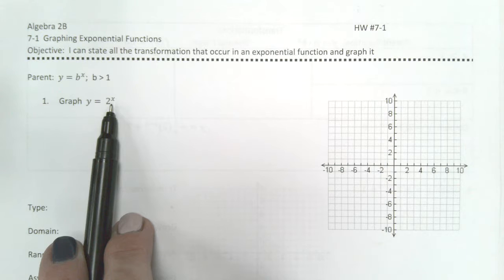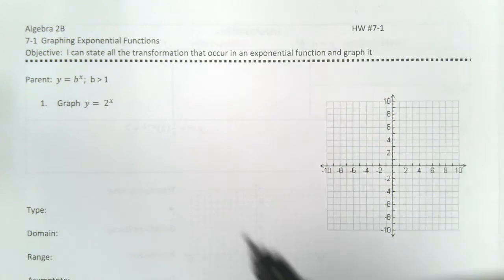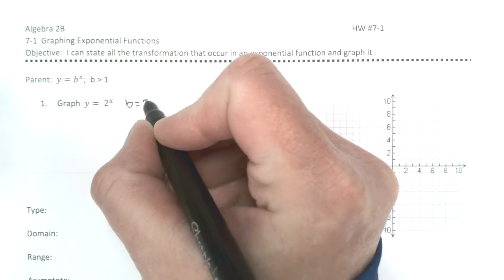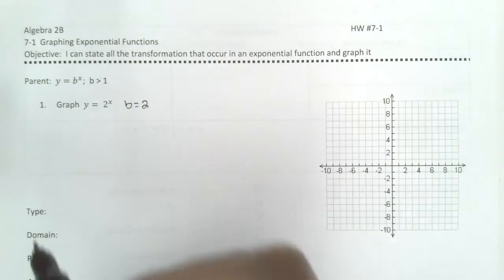So I'm going to graph y equals 2 to the x. So in this case, b equals 2. We'll come back to that a little bit later.